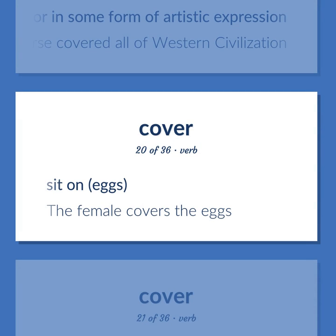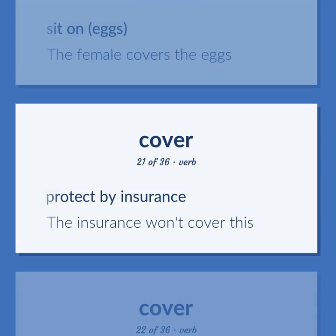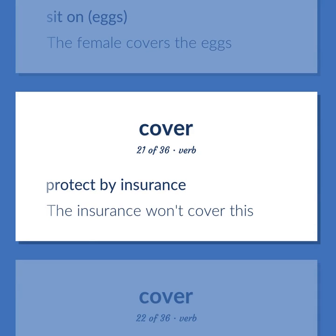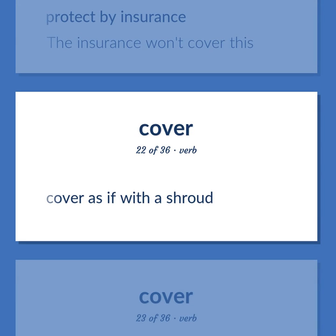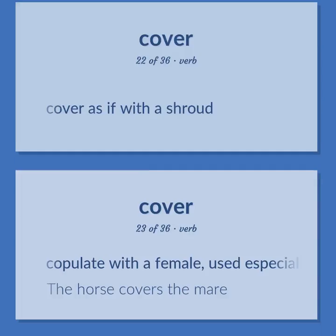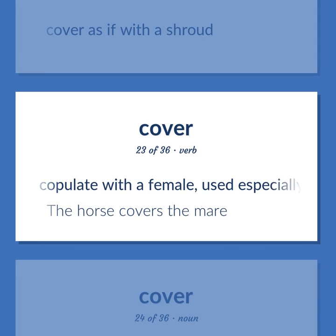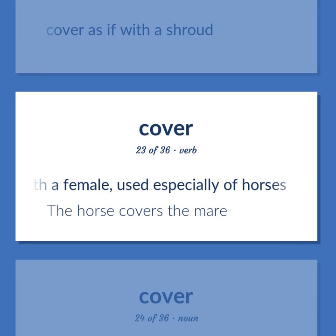Sit on eggs. The female covers the eggs. Protect by insurance. The insurance won't cover this. Cover as if with a shroud. Copulate with a female, used especially of horses. The horse covers the mare.